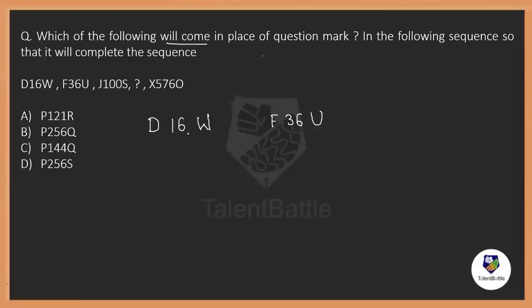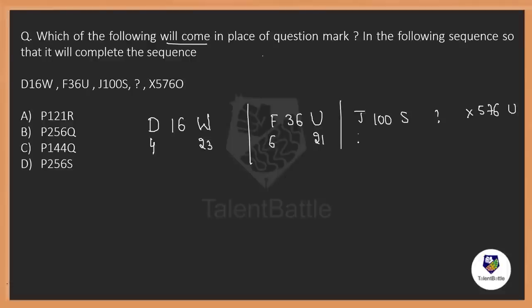Let's take the series: D is 16, W, F, 36, U, J, 100, S. Then question mark, X, 576, U. So first I am going to write the alphabetical numbers. D is 4, W is 23, F is 6, U is 21 — as per the order they appear. And next, J is 10, S is 19, X is 24, and U is 21.